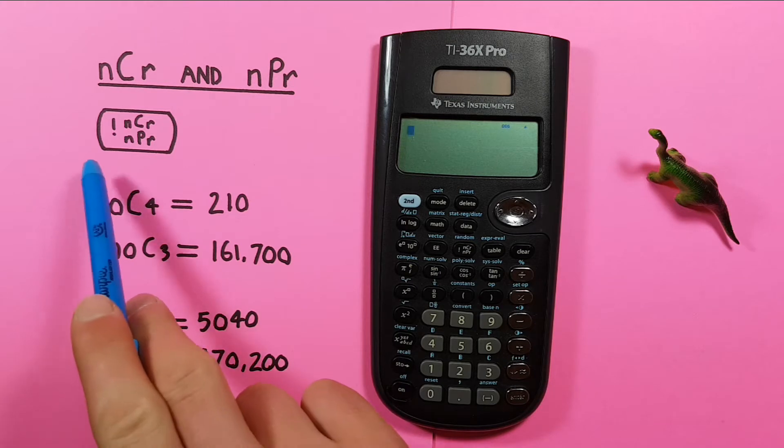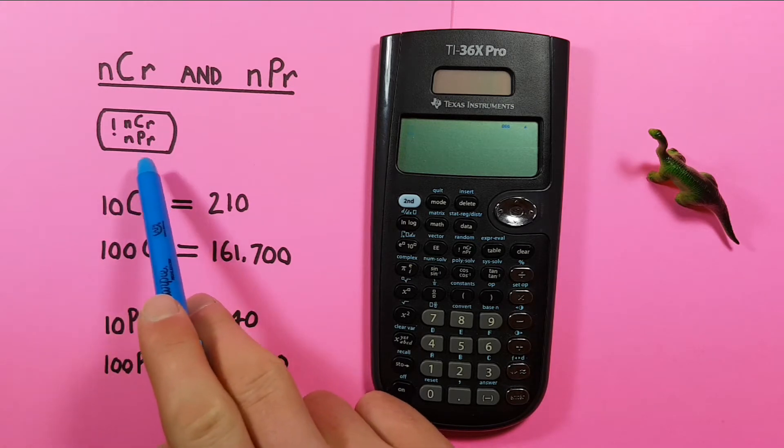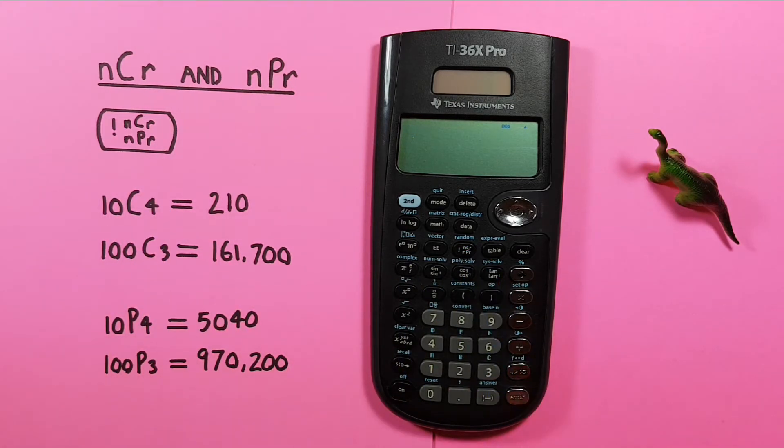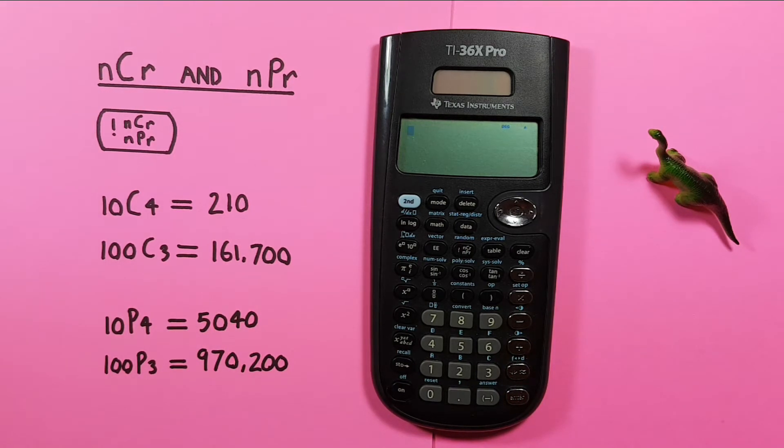To do this we'll be using the combination permutation key that looks like this, located here. To start, if we want to solve combinations where we choose a certain number of items from a set and the order does not matter,